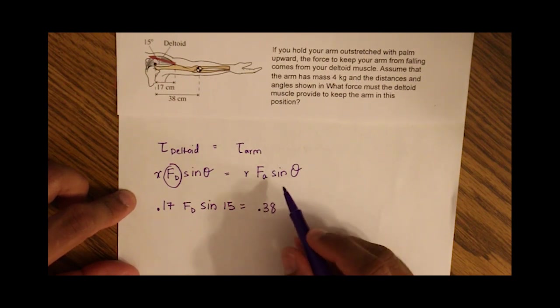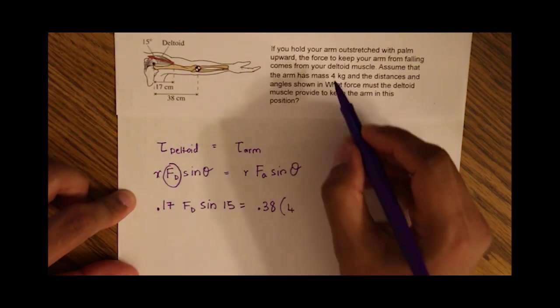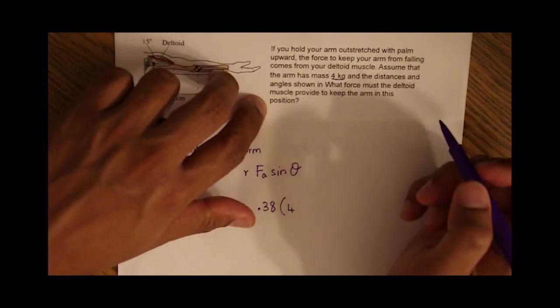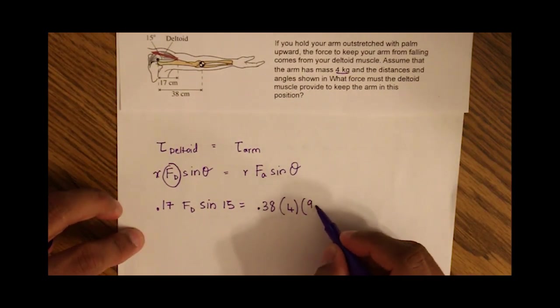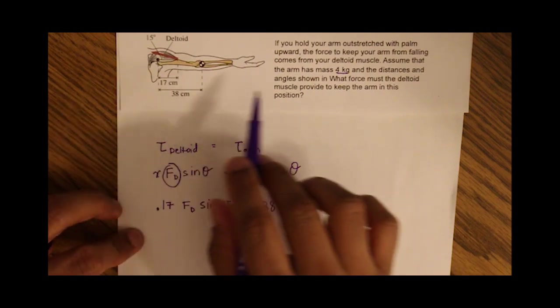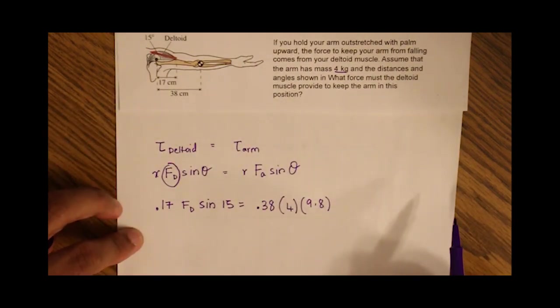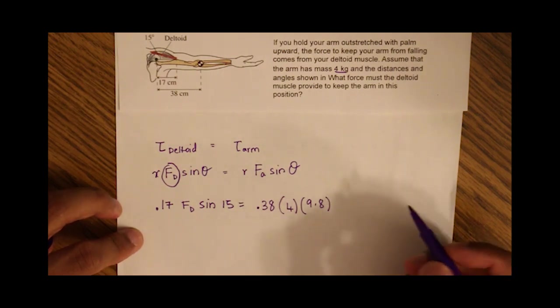The radius for the arm is given to us as 0.38 meters, or 38 centimeters. The force of the arm is its mass times its acceleration due to gravity, which is 4 kilograms times 9.8 meters per second squared. And the arm is perpendicular, so sine of 90, which is just 1.